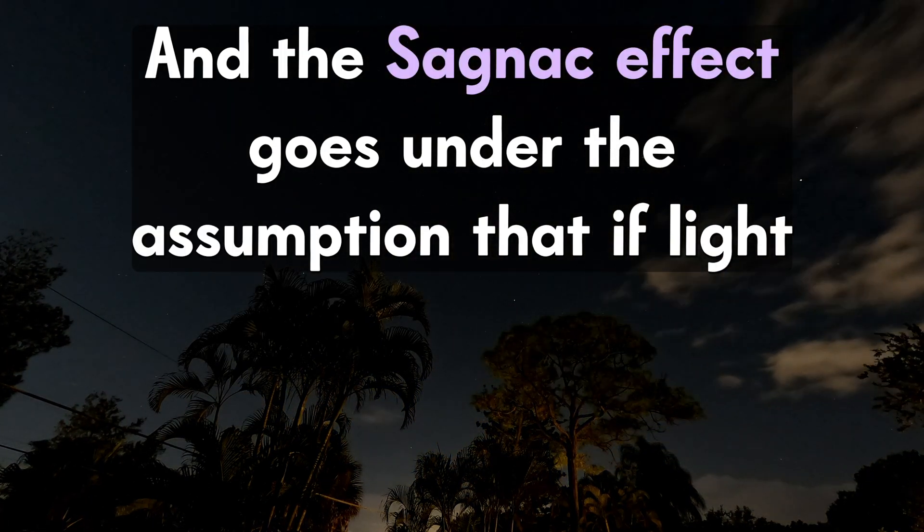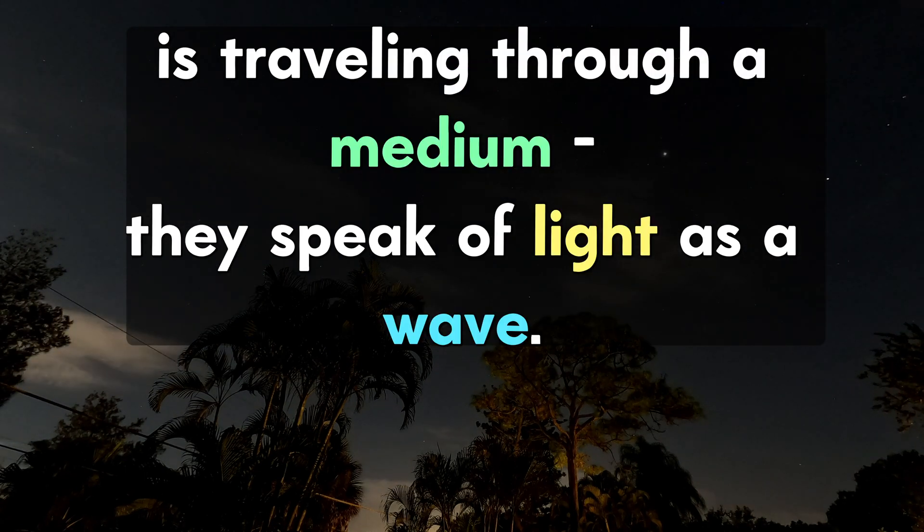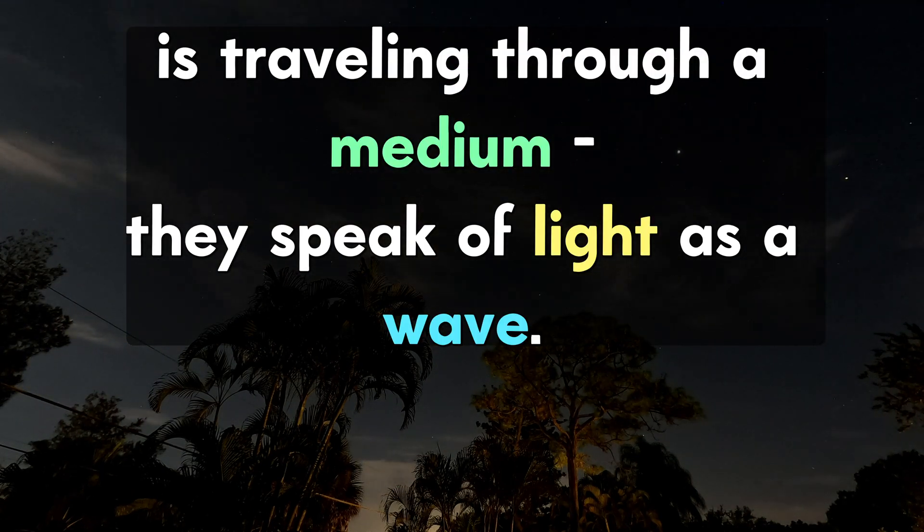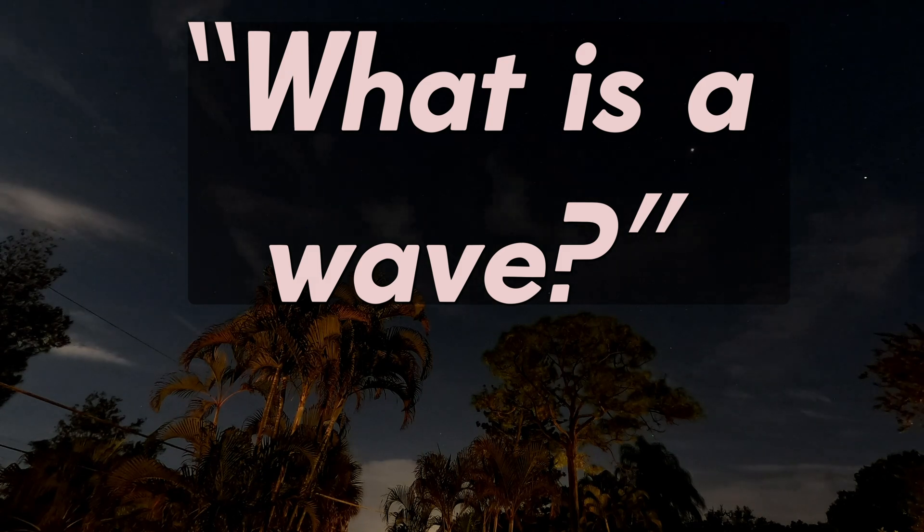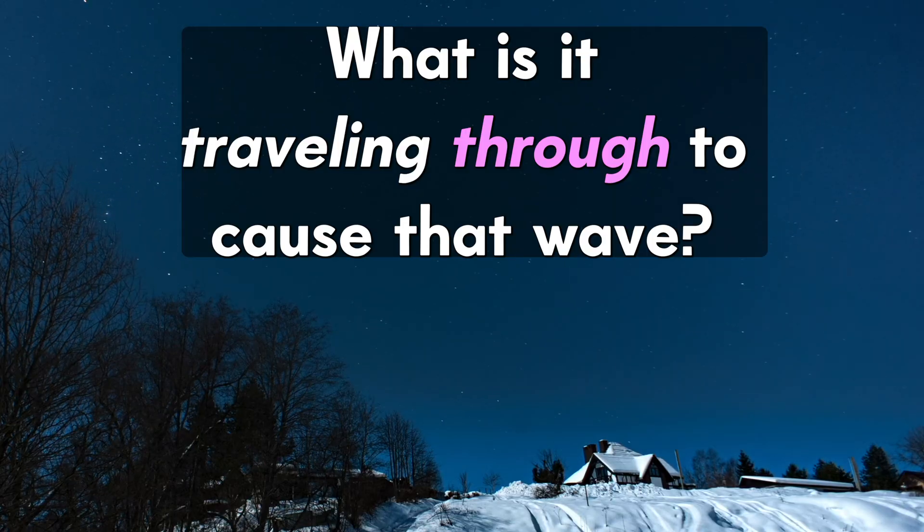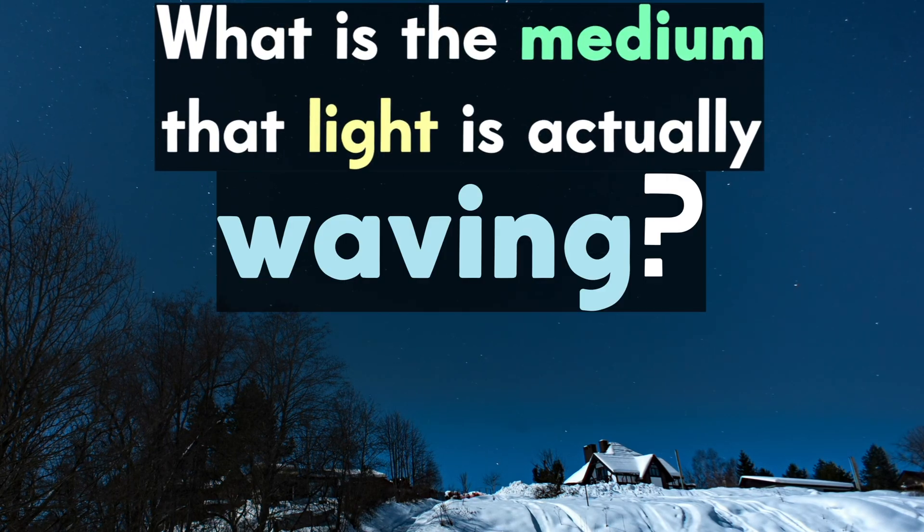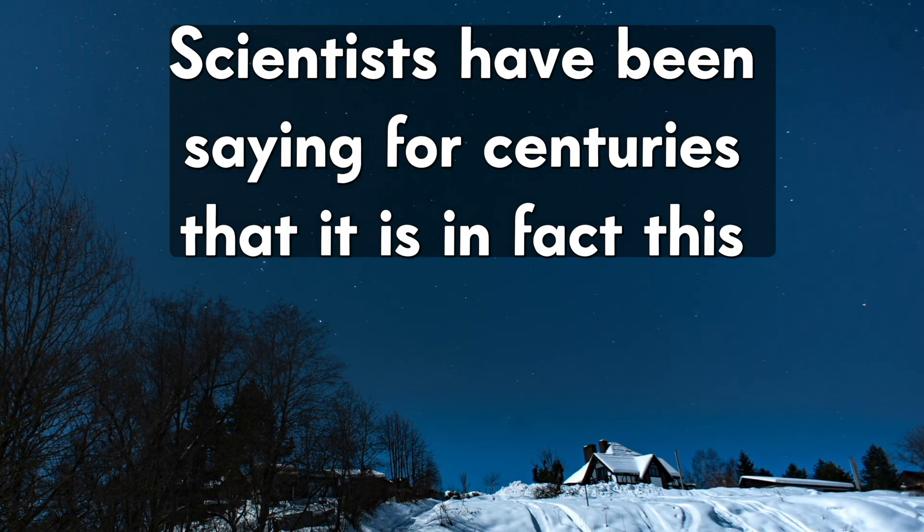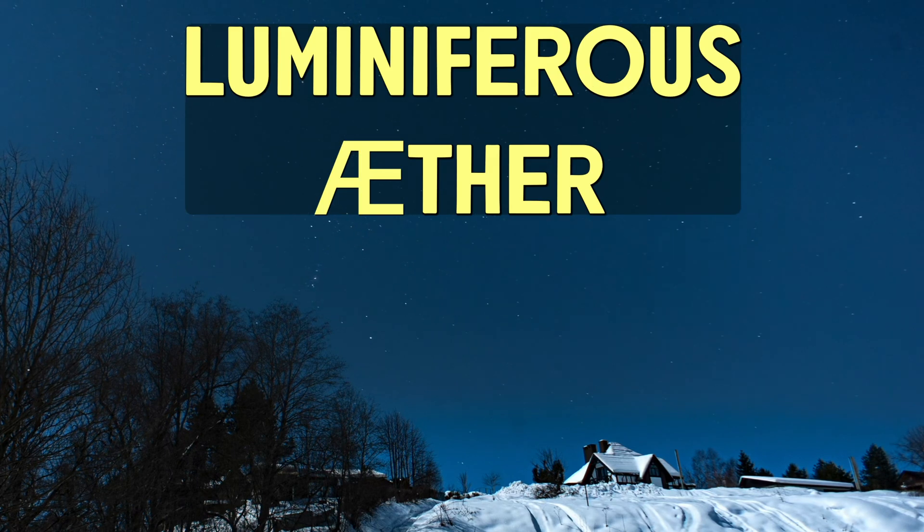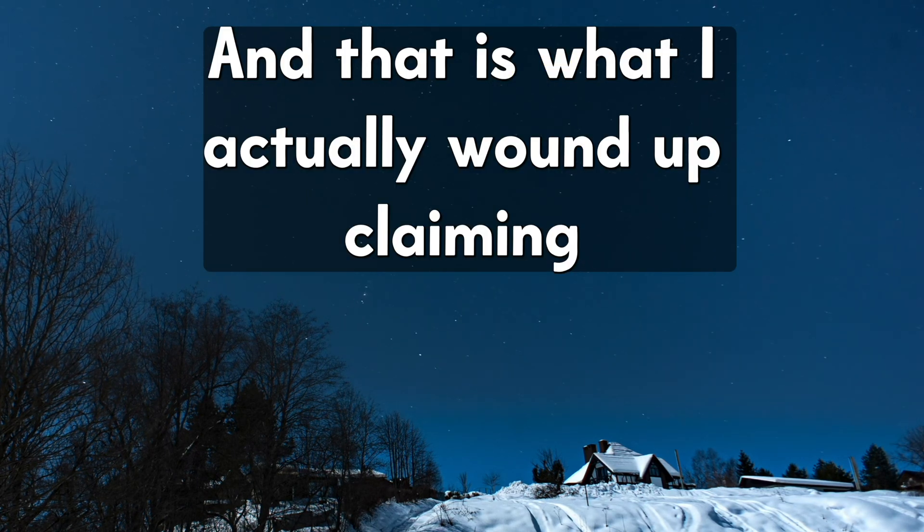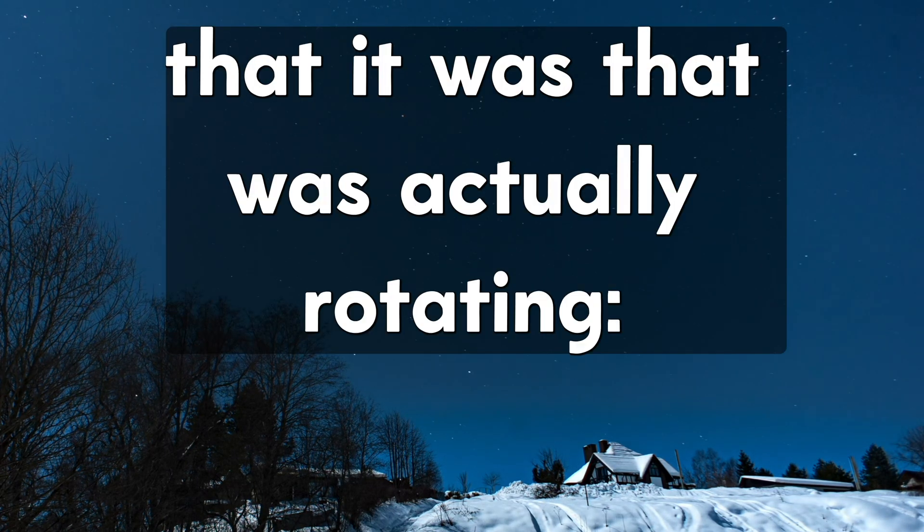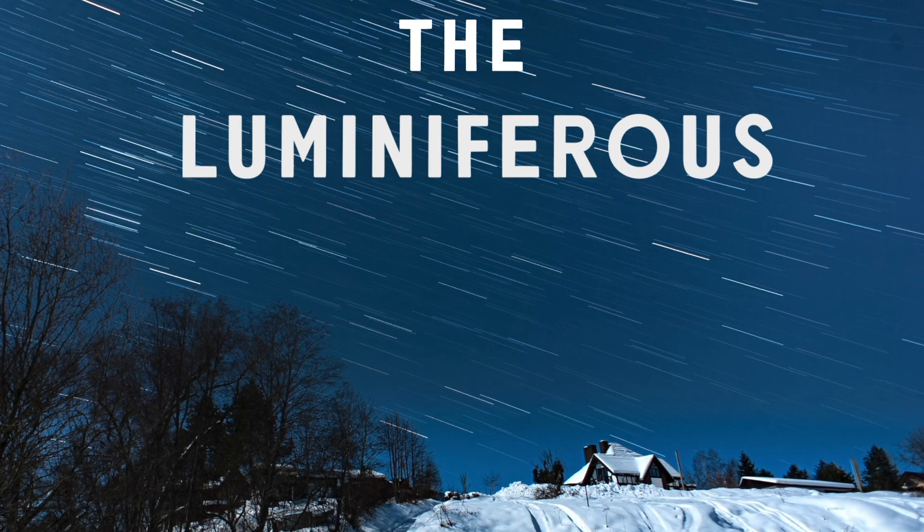The Sagnac effect goes under the assumption that if light is traveling through a medium, they speak of light as a wave. You have to ask yourself, what is a wave? What is it waving? What is it traveling through to cause that wave? What is the medium that light is actually waving? Scientists have been saying for centuries that it is in fact this luminiferous ether. And that is what I actually wound up claiming that it was that was actually rotating, the luminiferous ether.